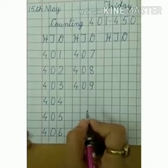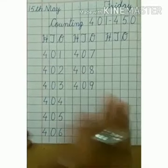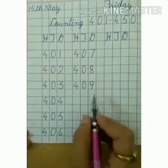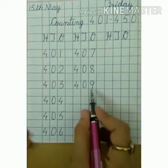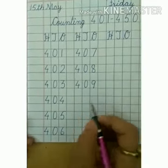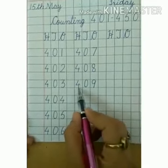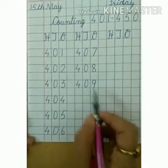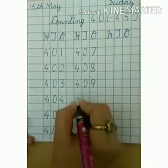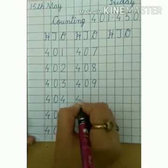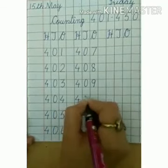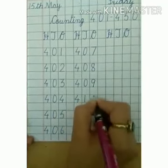Here we will say bye-bye to the 9 number and hi to the next number. So after 409, we will write 410.